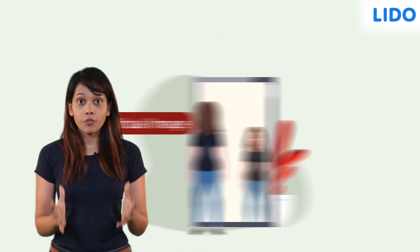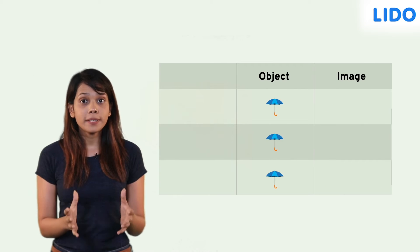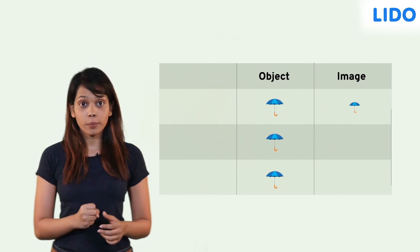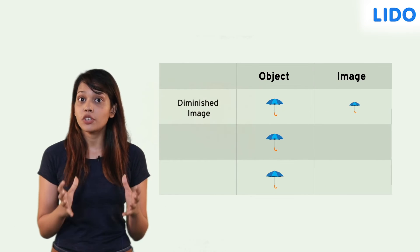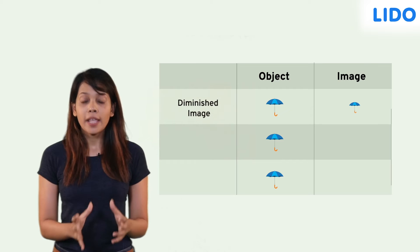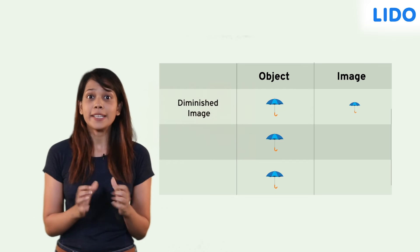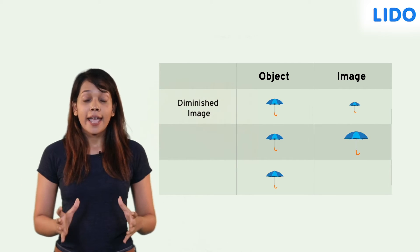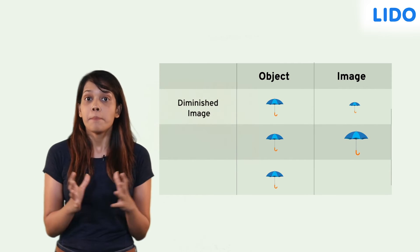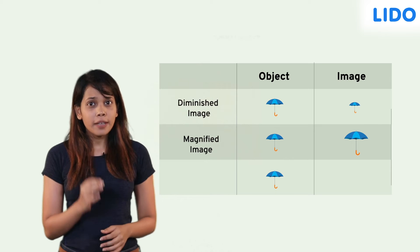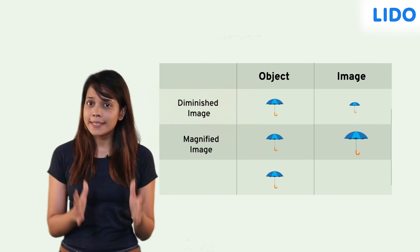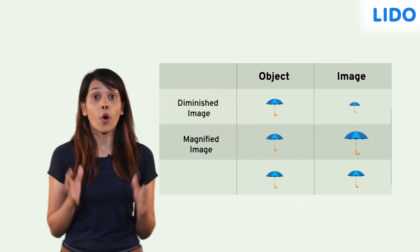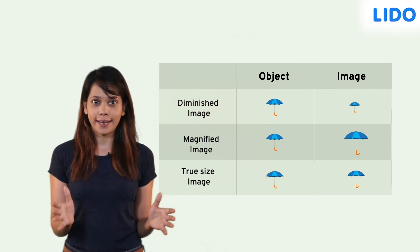If the image formed by an optical device is smaller than the object, it is called a diminished image. If the image is larger than the object, it is called a magnified image. If the image is of the same size, it is said to be of true size.